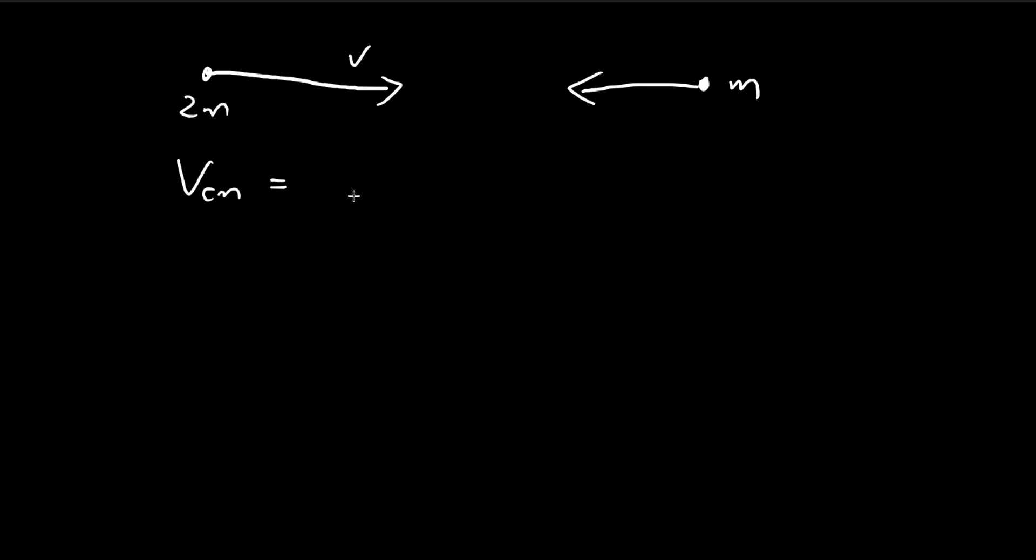So the velocity of the center of mass is equal to 2m times this velocity v. So again, we're taking rightwards as positive, plus m times a negative v. So it's moving in the left direction, divided by 2m plus m.